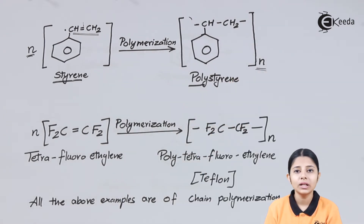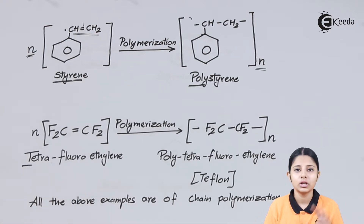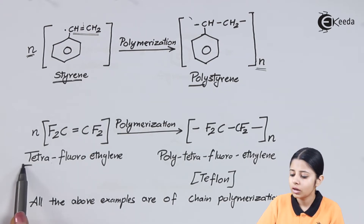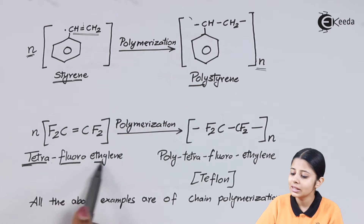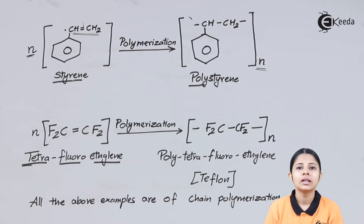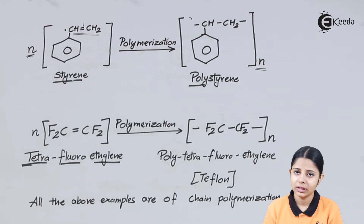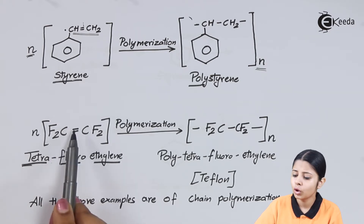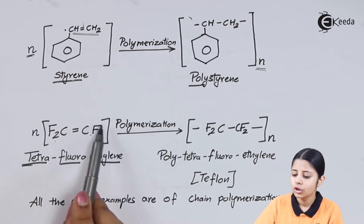The most commonly used polymer is Teflon — tetrafluoroethylene. Breaking down the name: tetra means four, fluoro means fluorine, so four fluorine groups; ethylene comes from ethane, meaning two carbons with a double bond, making it an alkene. So tetrafluoroethylene is two carbons connected by a double bond with four fluorine atoms attached — one, two, three, four fluorines. This is the monomer tetrafluoroethylene.